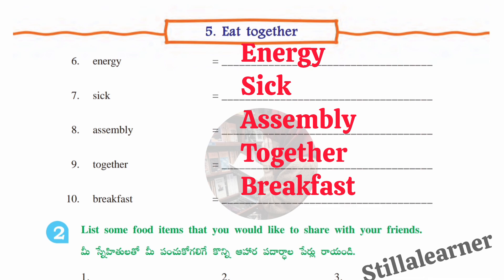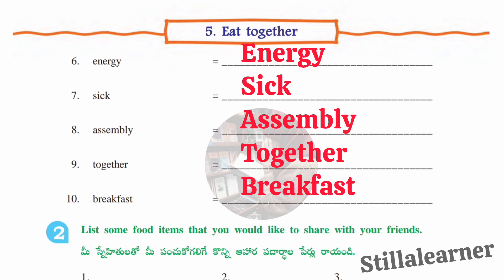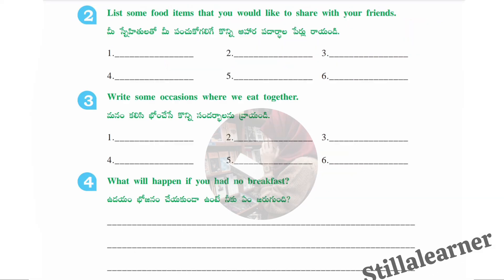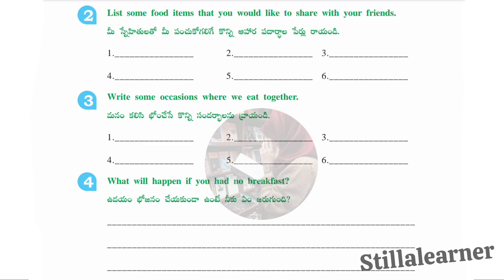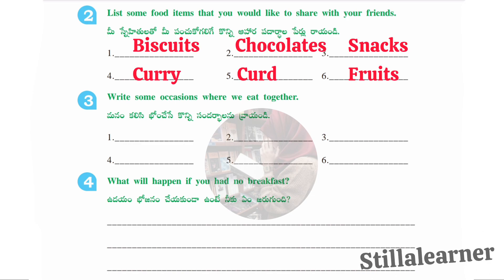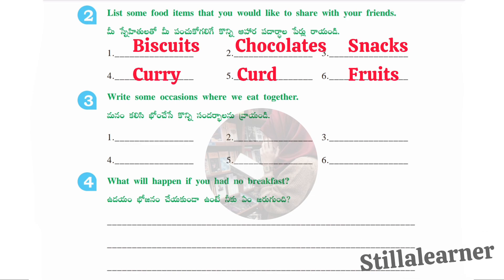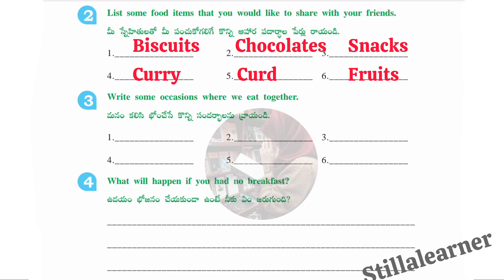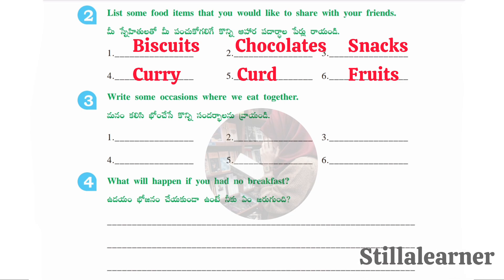Now we'll move to the second section: list some food items that you would like to share with your friends. The answers are: biscuits, chocolates, snacks, curry, curd, and fruits.